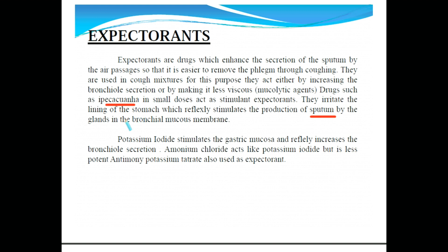Sputum is produced by the glands in the bronchial mucous membrane. When sputum increases, it helps increase the air passages, making it easier to remove phlegm through coughing.